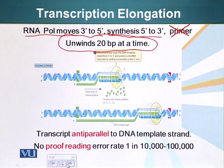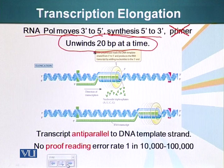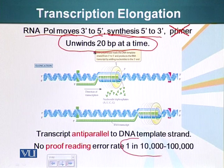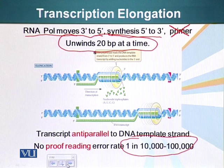Another difference between making RNA and making DNA is that DNA errors cannot be tolerated — DNA is the genetic information, the master blueprint of the cell, conveyed from one generation to the next, and changes can have catastrophic results. But RNA is not a permanent molecule, at least in eukaryotic cells. There is no proofreading ability in RNA polymerase; the error rate is about 1 in 10,000 to 100,000. RNA polymerase makes mistakes, but that's okay because RNA is short-lived — it is made and degraded fairly rapidly, but has enough time to make proteins.